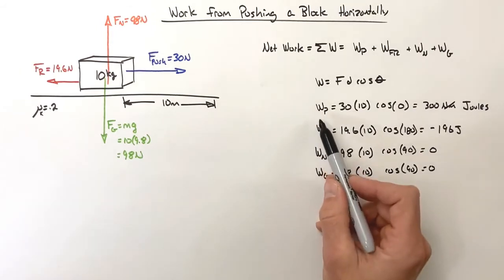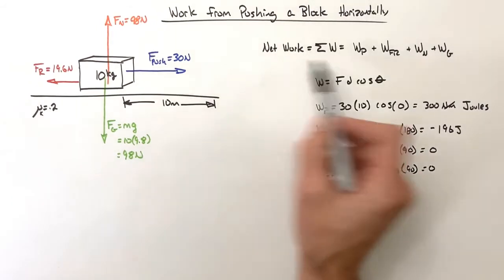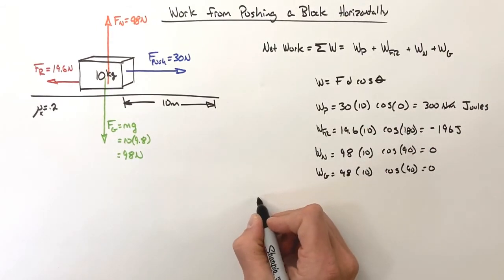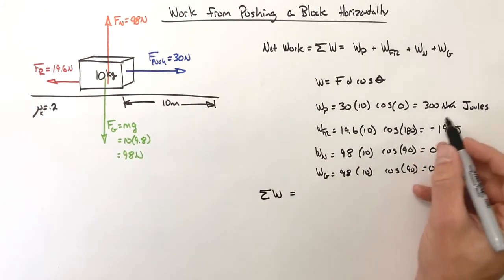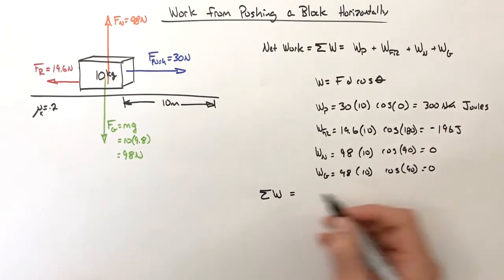So if we want to go through and look at these four works and add them up to get the total work, that means the sum of all works done on the block is going to be simply the sum of these four works.